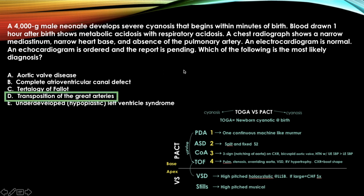The answer is transposition of the great arteries. This is a child with cyanosis — go to Toga versus Pact. TOGA = cyanosis; TOF = cyanosis. TOGA is a newborn cyanotic at birth, and this is a neonate cyanotic within minutes of birth — jump straight to transposition of the great arteries. There are other giveaways in the question, but the chart keeps it simple and narrows it to the right answer.